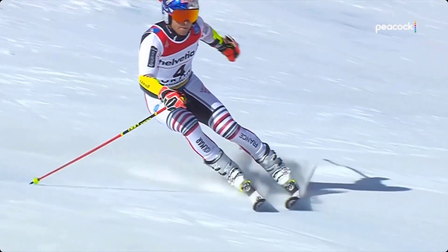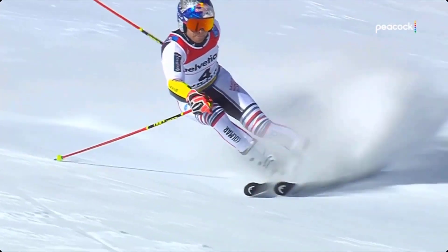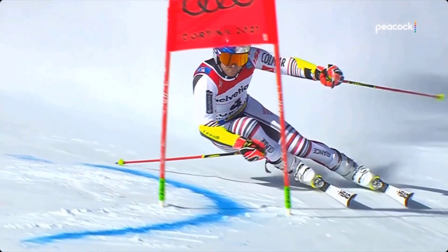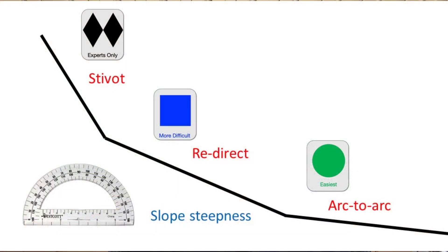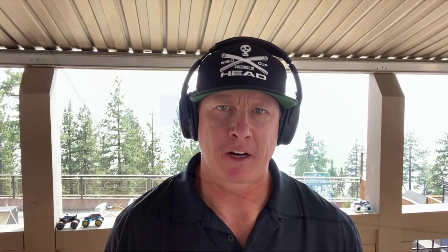The stivit is a full-blown pivot, followed by a sideslip until the fall line, then the ski is arced. So both turn initiations lead to an arc, because arcing is cool. The steeper the terrain, the more the stivit is used, while on the moderate blues, the redirect can line you up for carving part of the turn. And on the flats, you better be sparking arc to arc.